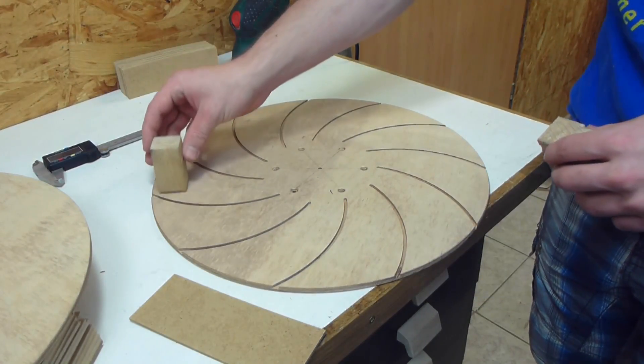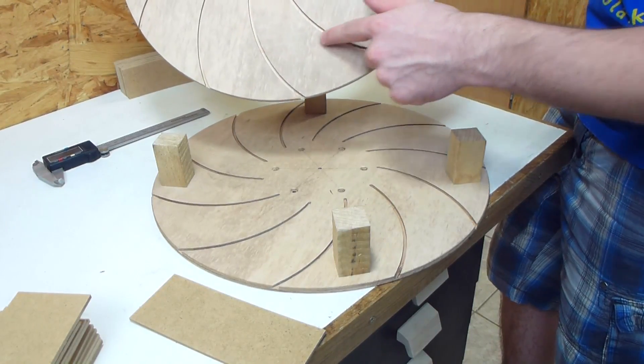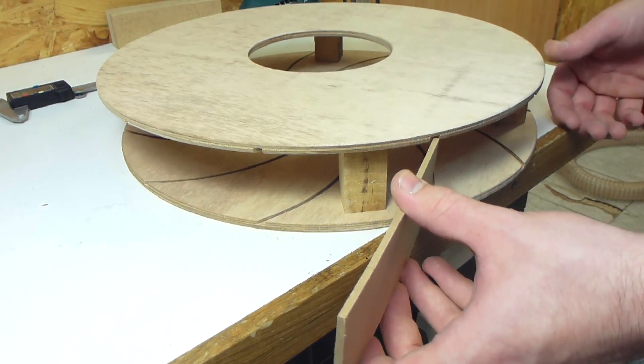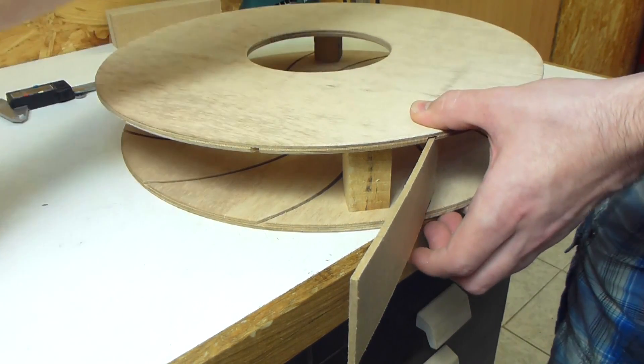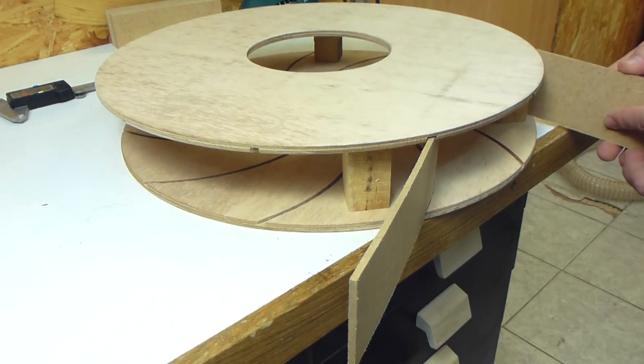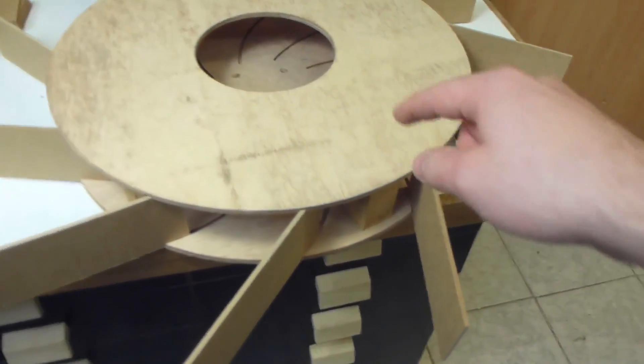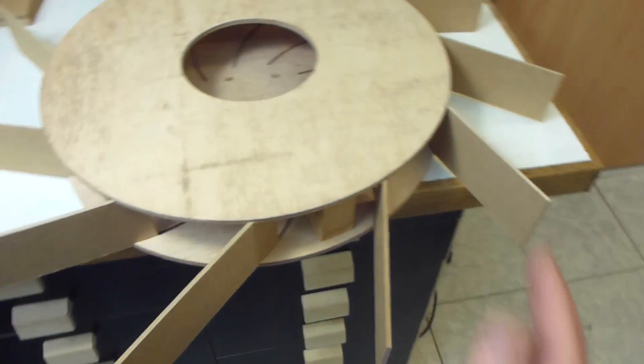So I get some spacer blocks that represent the thickness of the impeller. And then I have to line up all the grooves with each other. And I do this by putting some vanes in just a little bit and I do this on multiple sides. In theory the discs are now lined up and I can clamp them together at the spacer blocks and then push in all the vanes.